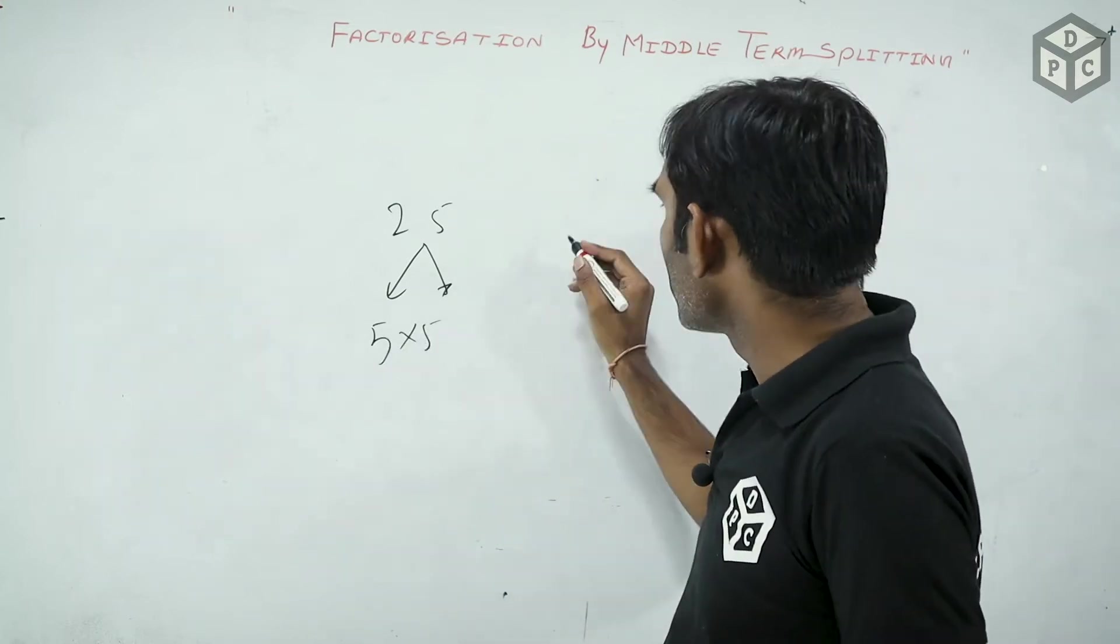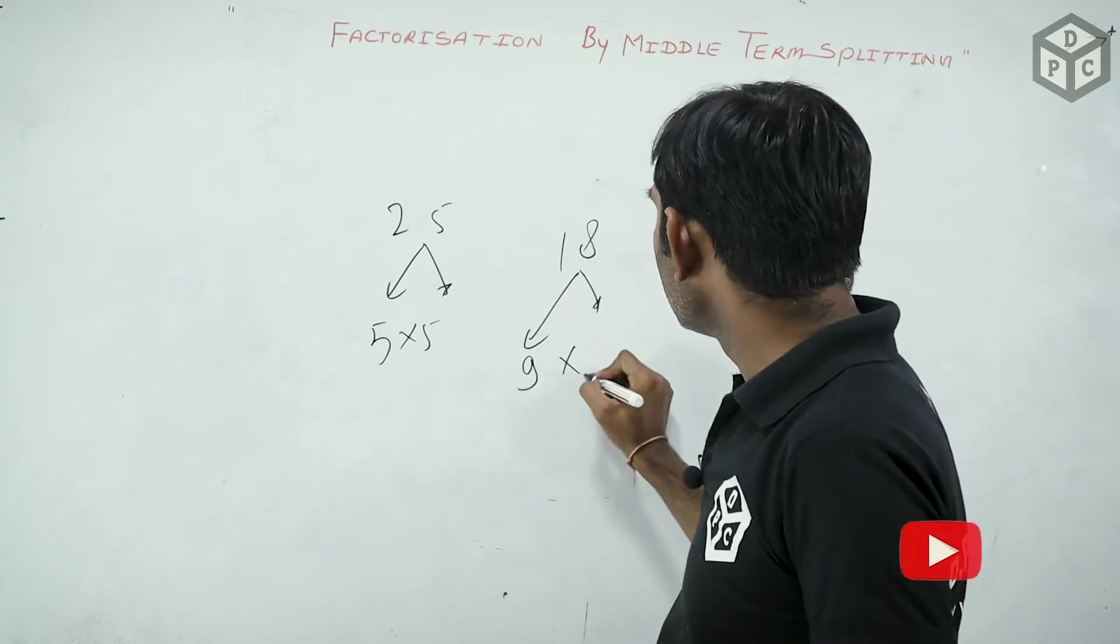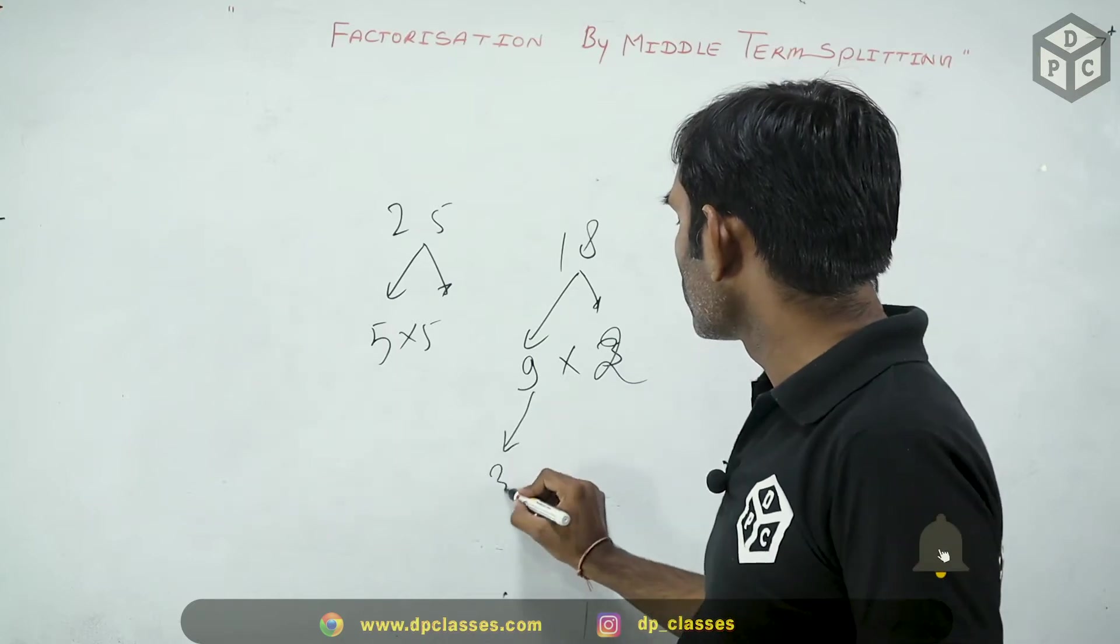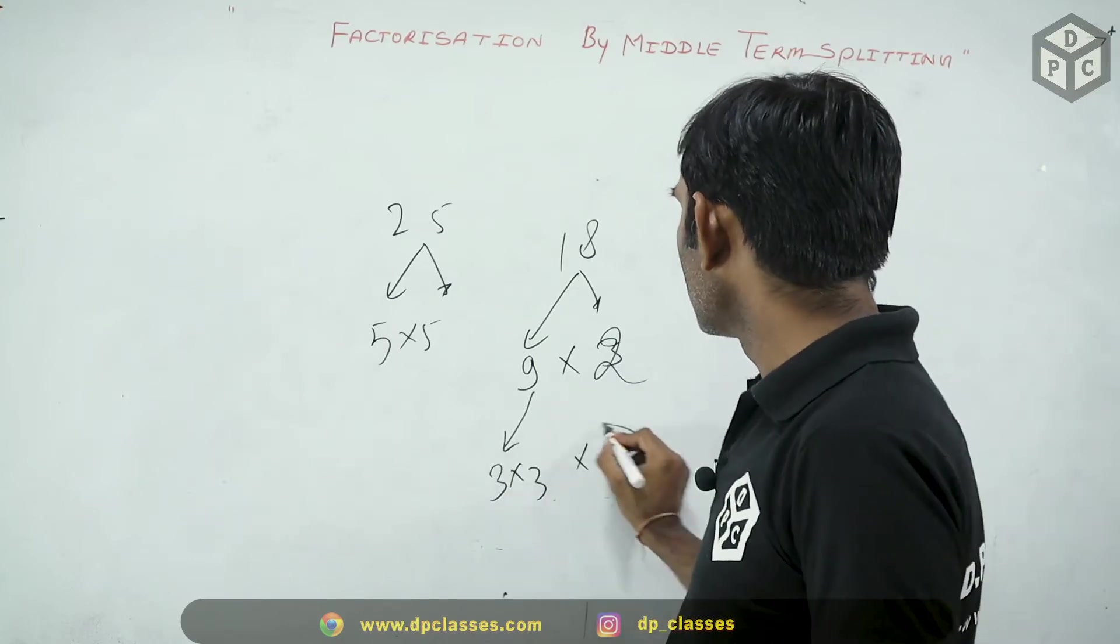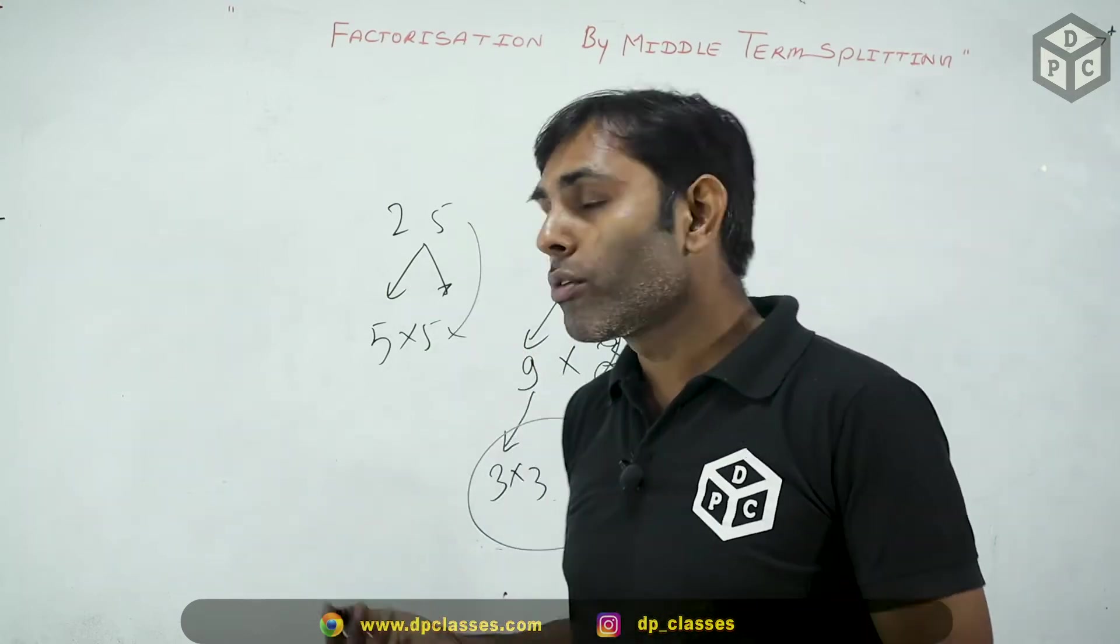Or suppose you have taken another number, like I have 18, I have to break it. So you have to break it, 9 into 2. If you break it, 3 into 3 into 2. This is going to break. Factorization means to be a factorization. It's a simple way.